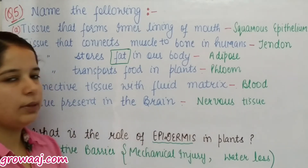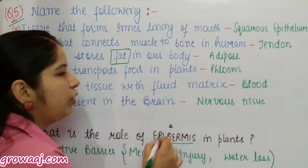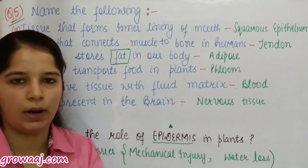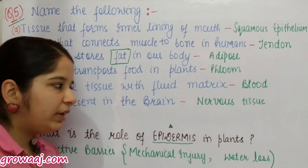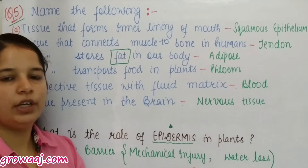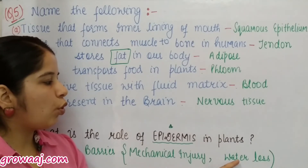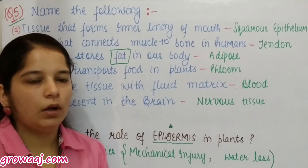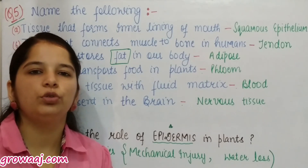The next question is: what is the role of epidermis in plants? Epidermis is a single layer of cells present in the outermost part of the plant. Its important function is protection. It acts as a protective barrier against mechanical injury, preventing damage to the inner and deep tissues. It also prevents water loss and protects cells from infection. So this was all about a few questions related to tissues.